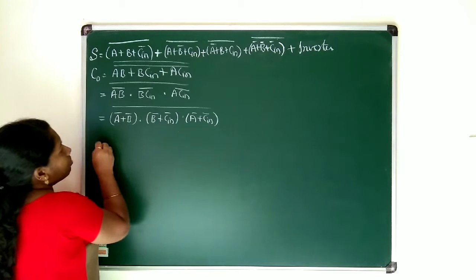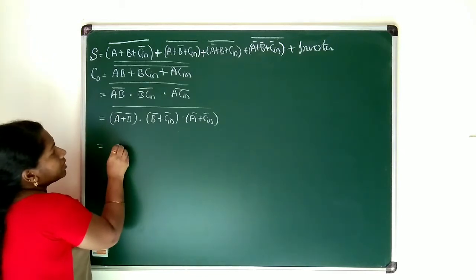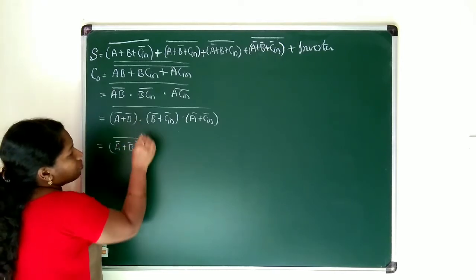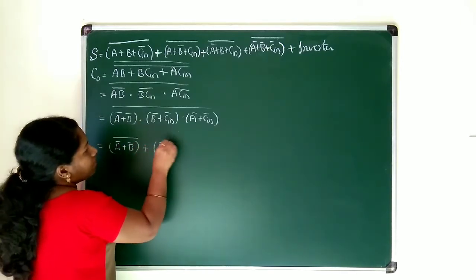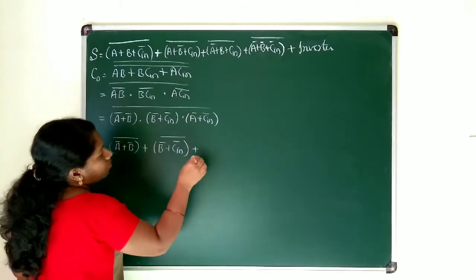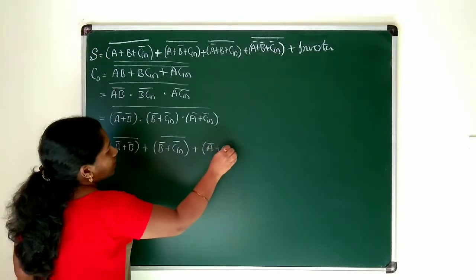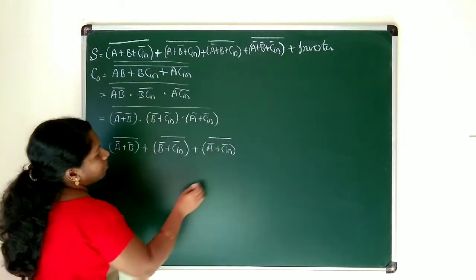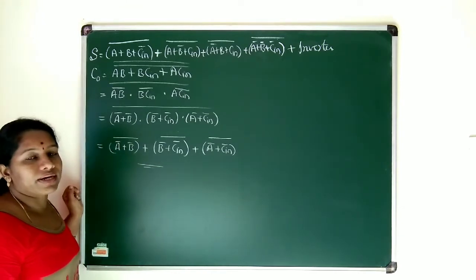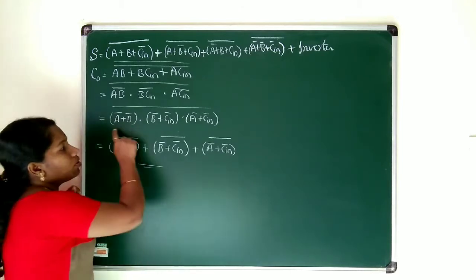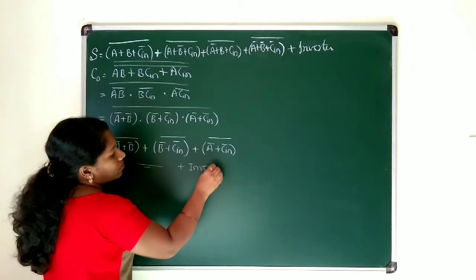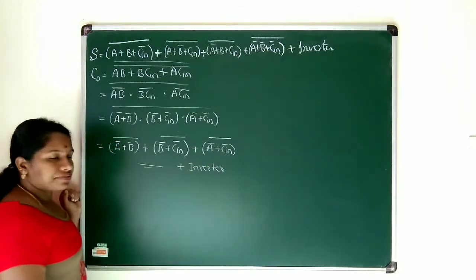Now I apply the whole complement to this. So, what you will be getting? A bar plus B bar, whole complement — this product turns to plus. Then B bar plus C-in bar, whole complement — this product turns to plus. And then A bar plus C-in bar, whole complement. Now all the parameters are related with plus, so that I can stop here. But I need to include an inverter, because whole complement is missing. So I need to add inverter to the circuit. Now, we are ready with sum expression and carry expression, so we will try to write the logic circuit.